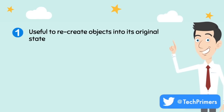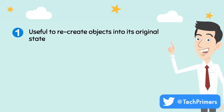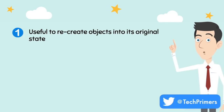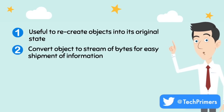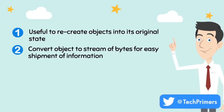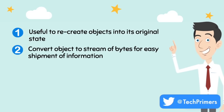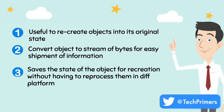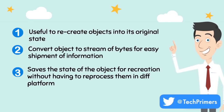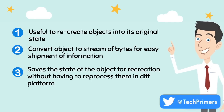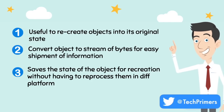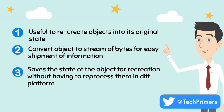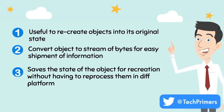Serialization is useful when we need to recreate objects into their original state in a different JVM. Serialization converts these objects into a stream of bytes so that they can be easily shipped from one JVM to another. It saves the state of the object for recreation without having to reprocess them in a different JVM or even a different platform.